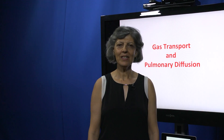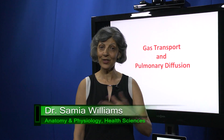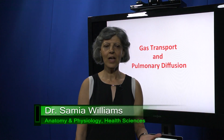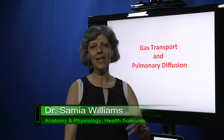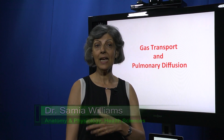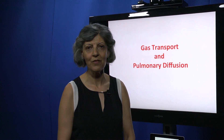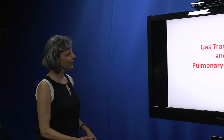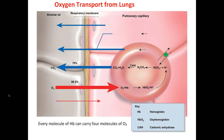Welcome back everyone. We discussed the process of ventilation, how air enters and leaves our lungs. We looked at the control and regulation of breathing. Now we're going to see how gases are carried in the blood and how they will be exchanged by the process of diffusion. We're looking first at gas transport, discussing oxygen and carbon dioxide — starting with oxygen.